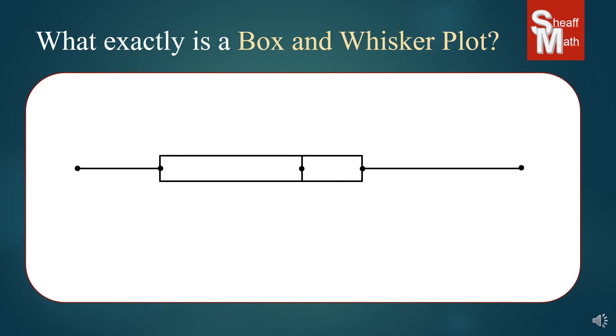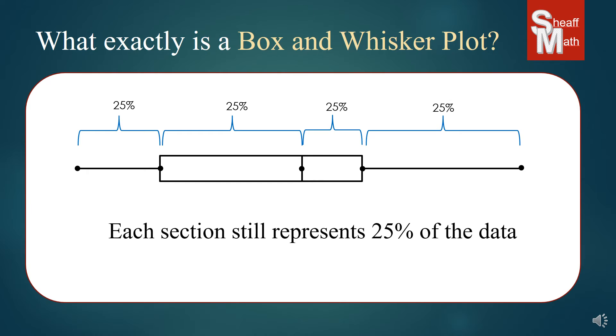So this plot, if you notice, is a little bit different than the other one. The sections are not the same length, but each one still represents 25% of the data. So let's say you surveyed 40 people, there would be 10 people in each group.